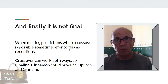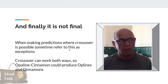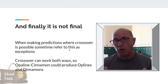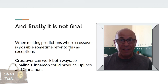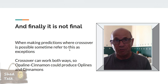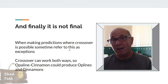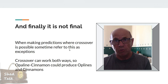One final point: crossover isn't final. If you've got an opaline-cinnamon and cross that with an opaline, it is possible that the opaline and cinnamon on the same chromosome will split and rejoin with the non-opaline cinnamon chromosome, separating them back out again into the standard arrangement. The chances of that happening are exactly the same as the chances of producing them on the same chromosome in the first place. So crossover works both ways.